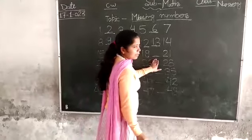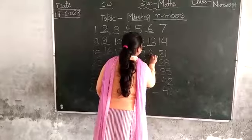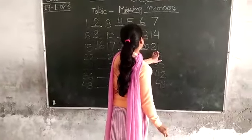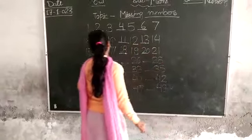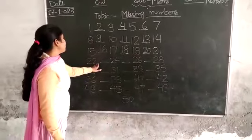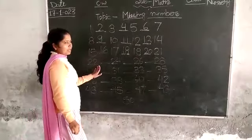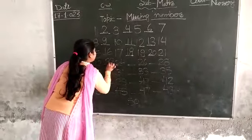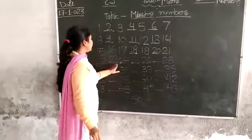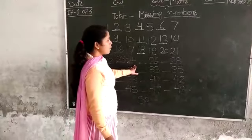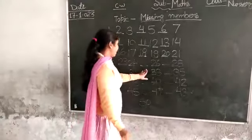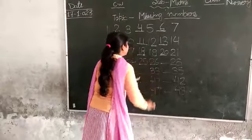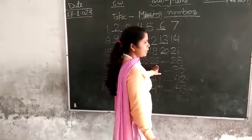19 after 20. 20 after 21 and 22. 22 after number 23. 23, 24. 24 after number 25. 25, 26.